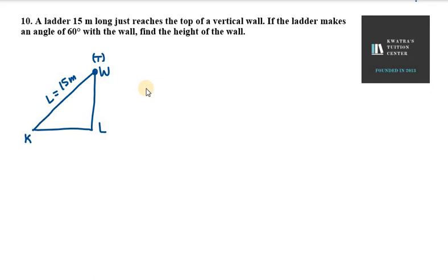So here there is a ladder that is 15 meters and I define the wall as WL, a vertical wall. If the ladder makes an angle of 60 degrees with the wall, then the ladder makes 60 degrees with the wall.